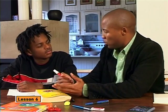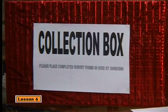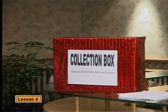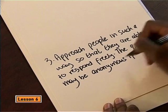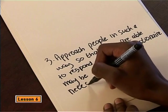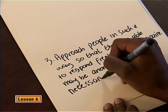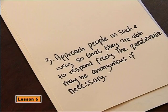It's also important that every person is approached in exactly the same way, because how a person is approached can influence the results. It can help to ask them to fill in a questionnaire which you collect in a closed box rather than answering face to face. In a government election or referendum, people might not want others to know who they are voting for, and they may not answer as honestly if the survey is not anonymous. So we can write: approach people in such a way that they are able to respond freely; the questionnaire may be anonymous if necessary.